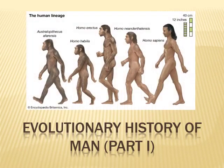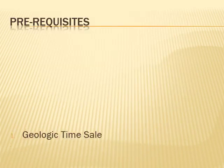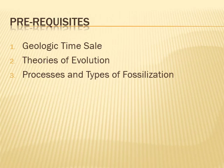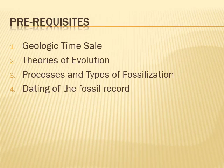Today we will study the evolutionary history of man and we will learn how today's modern man has evolved from its ancestors. Before we study this topic, we must have a concept of geologic time scale, theories of evolution, processes and types of fossilization, and dating of the fossil record. All of these will help us in grasping the concept of evolution.